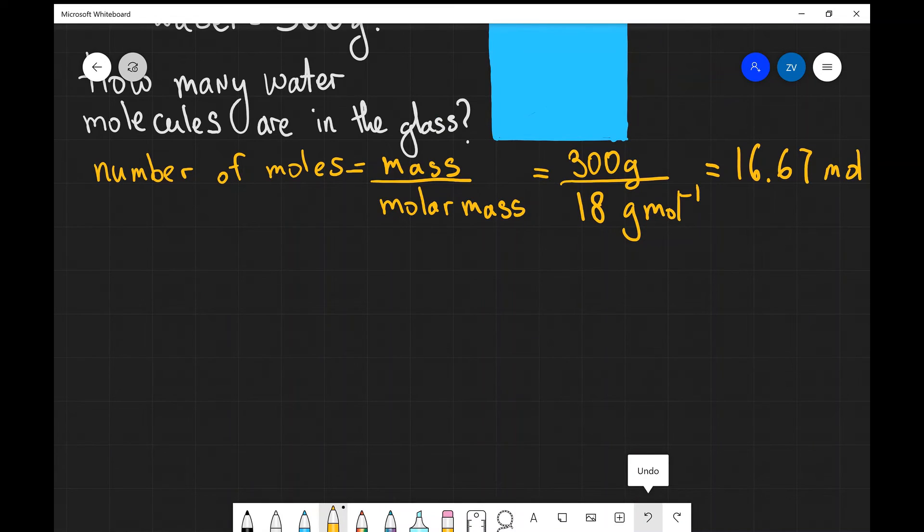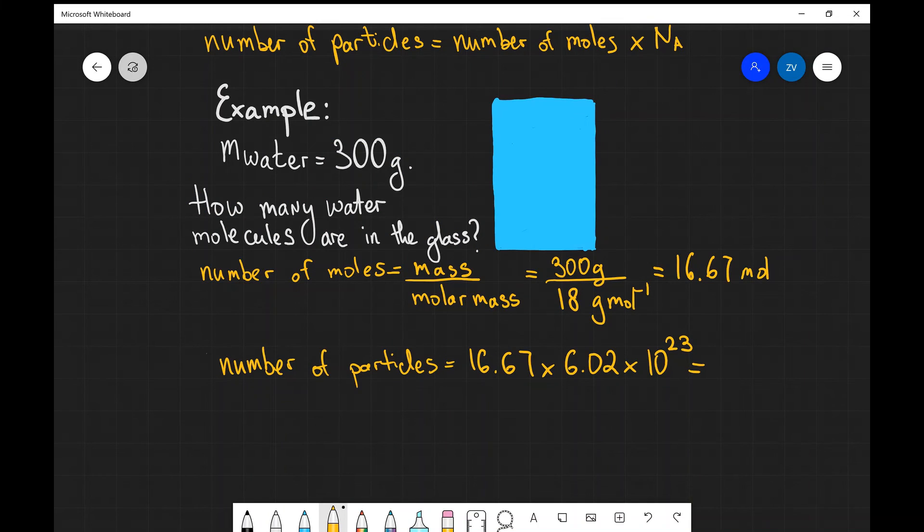We have the amount of substance, and remember, one mole is actually 6.02 times 10 to the power of 23 particles. The number of particles, that's going to be the number of moles, which in this case is 16.67, multiplied by Avogadro's constant Na, and this is 6.02 times 10 to the power of 23. And if we put that into a scientific calculator, we're going to get 1.0 times 10 to the power of 25 particles.